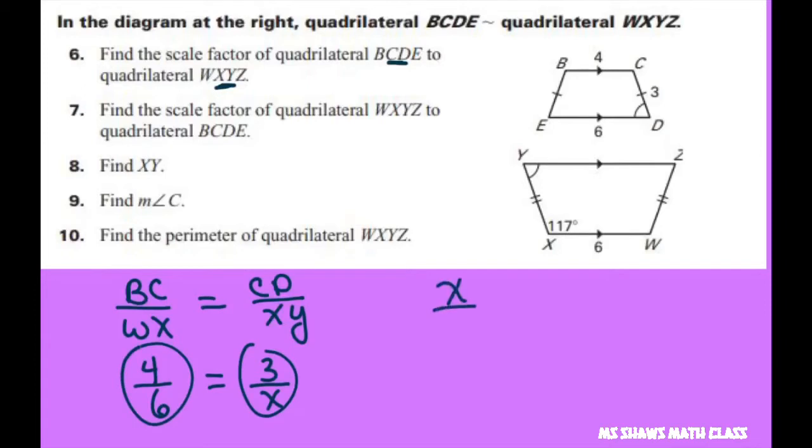I'm going to flip this around to make it easier. X is to 3 as 3/2, so you cross multiply and get X equals 9 divided by 2, which equals 9/2 or 4.5. So this is 4.5, and the other side is also 4.5.